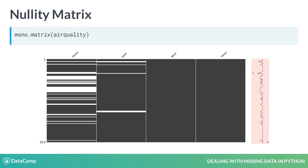The sparkline on the right summarizes the general shape of the data completeness and points out the row with the minimum number of null values in the dataframe, as well as the total count of columns at the bottom.